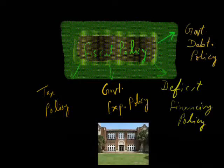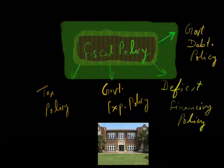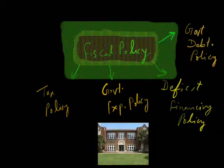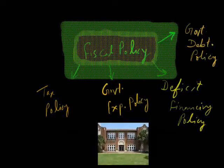Today we will explain the business topic: fiscal policy. This is a part of macroeconomics. Fiscal policy is the policy made by any government of any nation. In this policy, the government decides how to get money for public welfare, as there are different types of welfare activities carried out by a government.